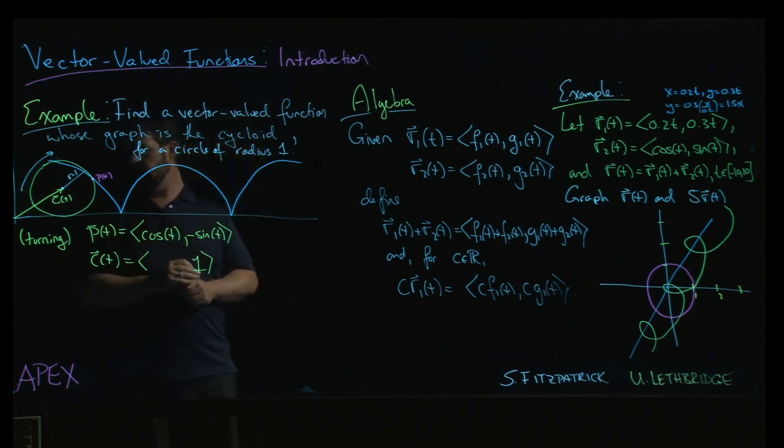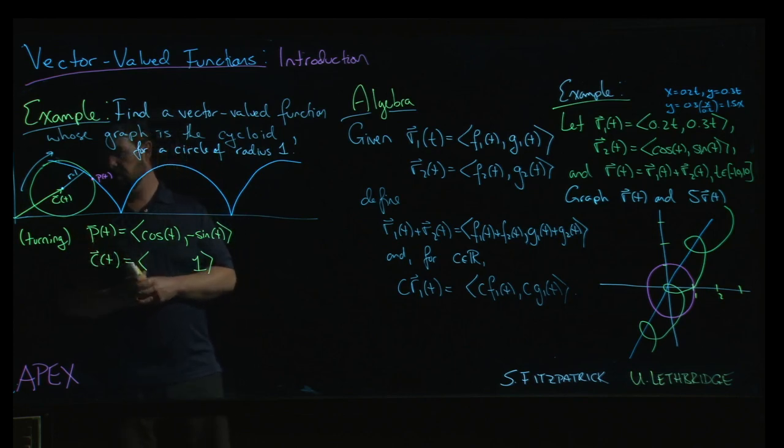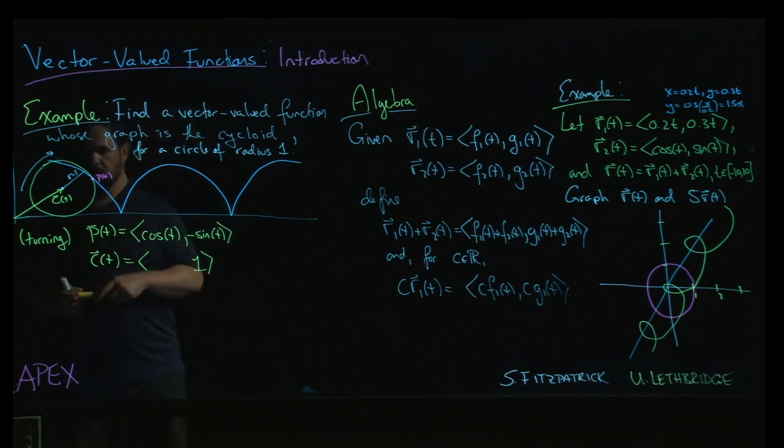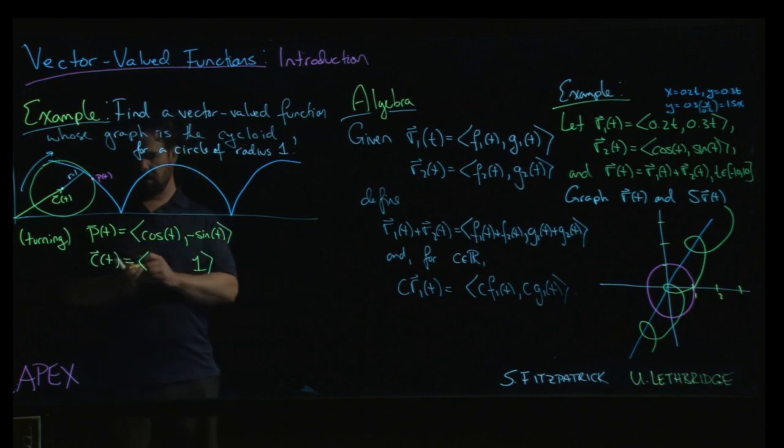And so the only thing to figure out is what multiple of t do we want to put in here, right? And one of the ways to think about that is, well, once, you know, we begin here, this sort of circle, the point on the cycloid begins there, and as the circle rolls, it completes one full revolution and ends up here. Right? And so how far have you gone when you get to this point?